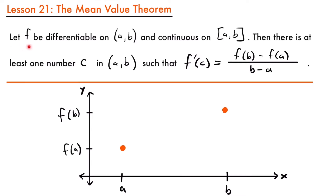The mean value theorem says: let the function f be differentiable on the open interval from a to b and continuous on the closed interval from a to b. Then there is at least one number c in that open interval such that the derivative at point c is equal to the slope between points a and b. If you remember from algebra, this was our formula for slope, equal to m, and so this represents the slope between the two endpoints of our interval.